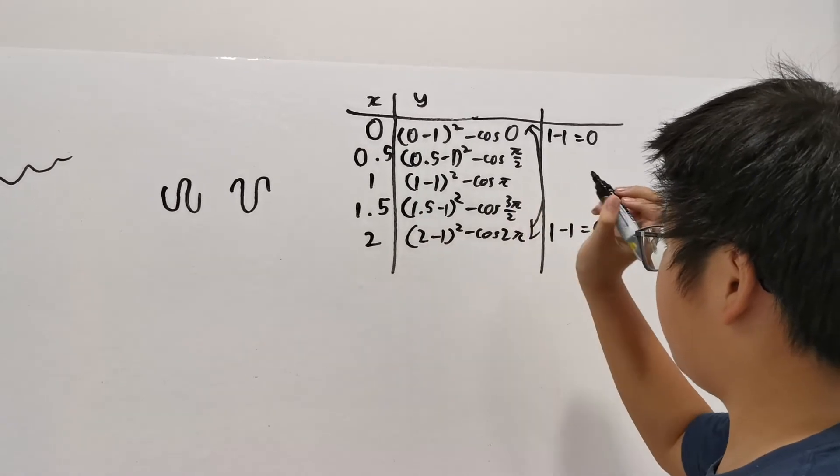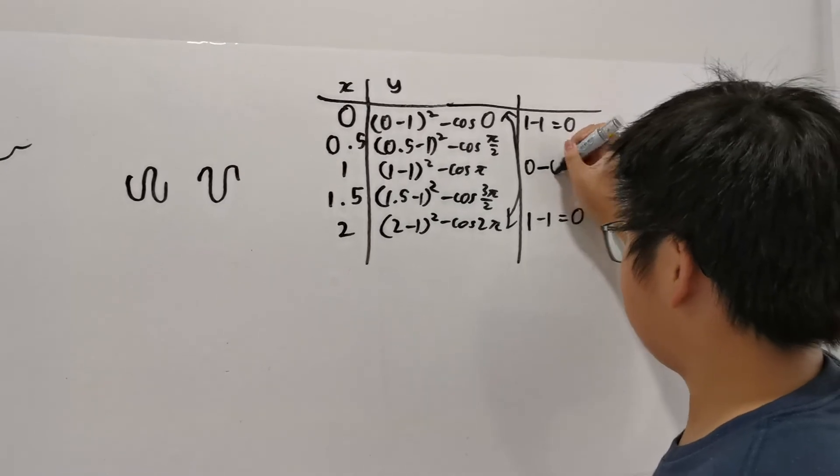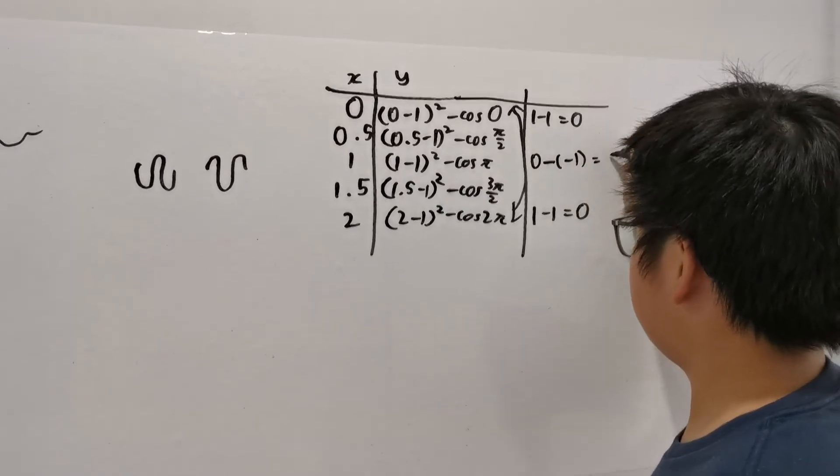Now let's calculate the value for 1. So it has 0 minus minus 1 equals to 1.